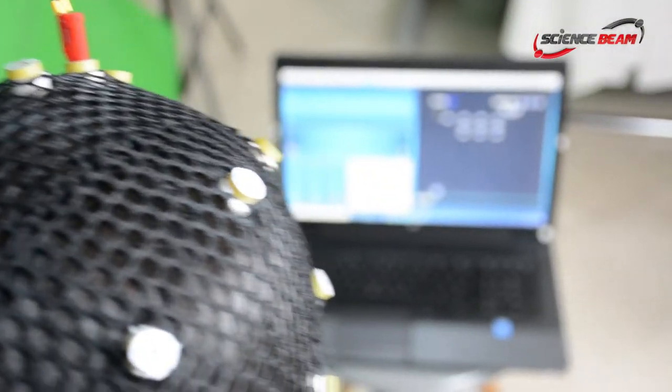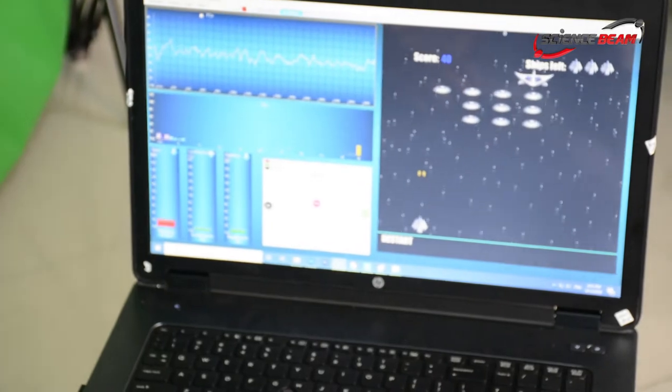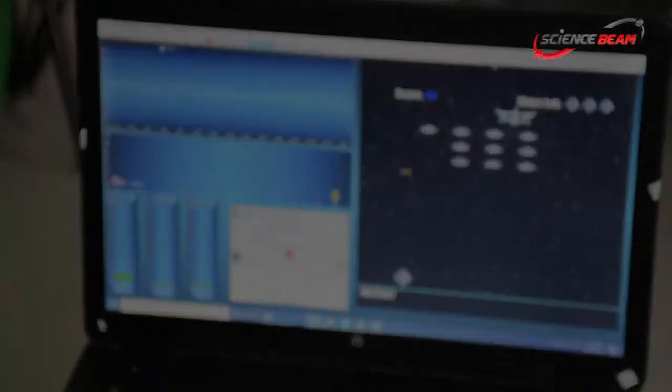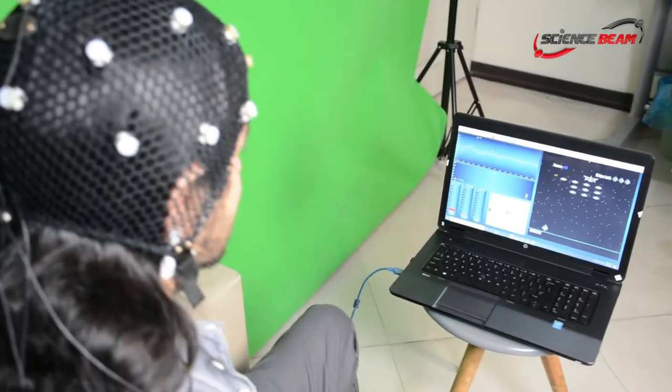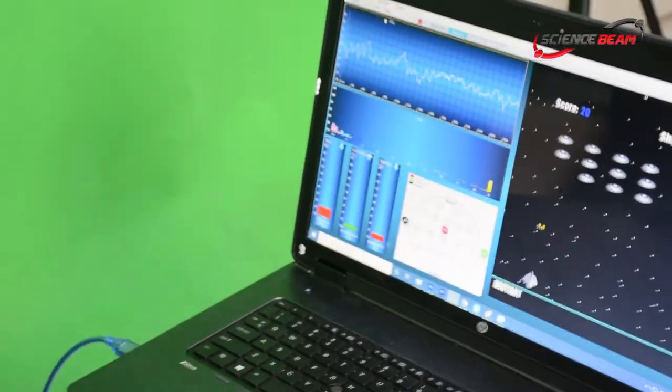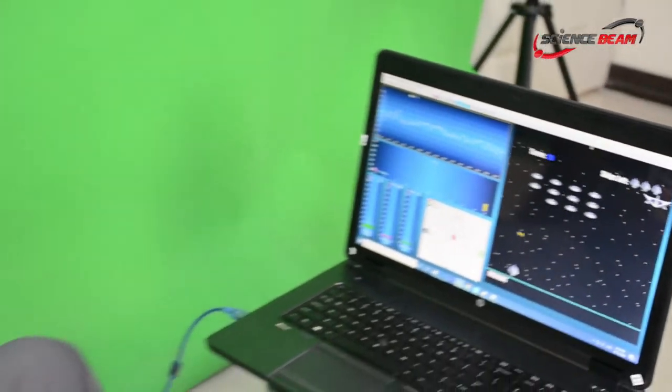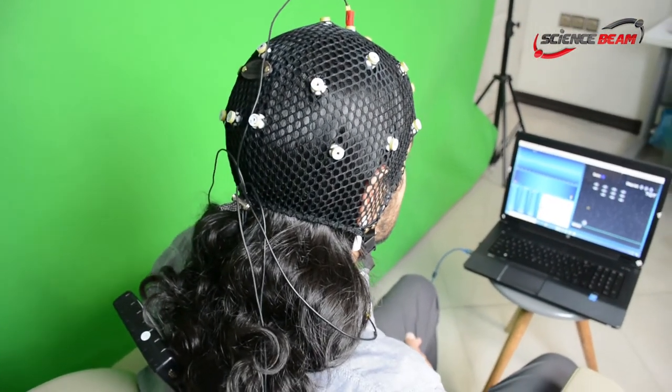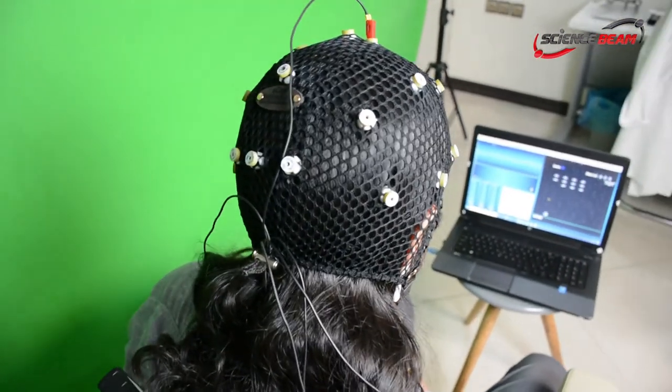If the client's brain doesn't function within an optimal range, the client receives a negative feedback, such as stopping the video, decreasing the sound of the song or shrinking the image of the movie. Over the course of a neurofeedback training program, the brain learns from the received feedbacks to operate within a more optimal range outside of training sessions.